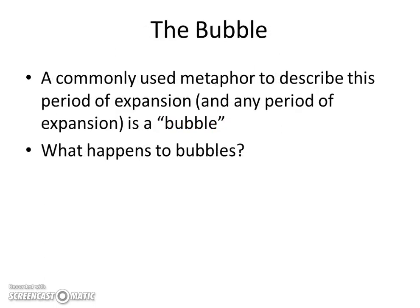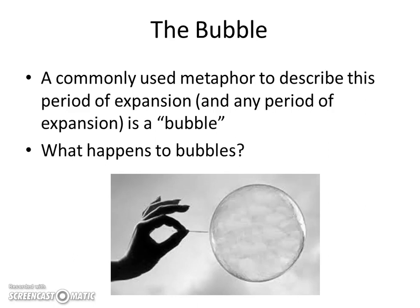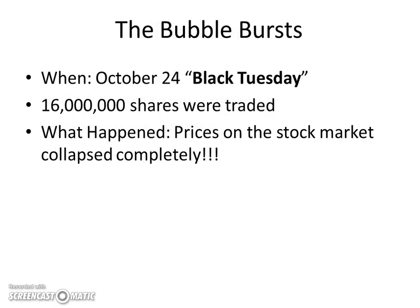The commonly used metaphor to describe this period of expansion is known as a bubble — and what happens to bubbles? They burst, also known as busts. In October of 1929, known as Black Tuesday, over 16 million shares were traded on the stock market — a record for the New York Stock Exchange at that point. Most people were just trying to dump their stocks as, over the course of the month, stocks were starting to fall. At one point, the Rockefellers stepped in to try to artificially inflate the market by buying a bunch of stocks, but it was unsuccessful.